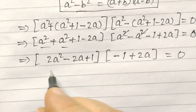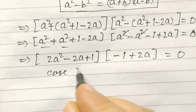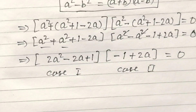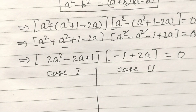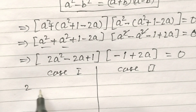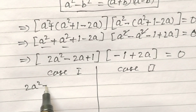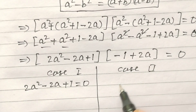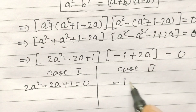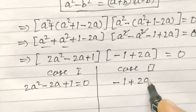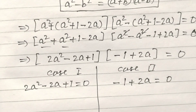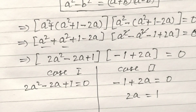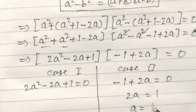We now have two cases. Case 1: minus 1 plus 2A equals 0, so 2A equals 1, giving A equals 1/2. Case 2: 2A² minus 2A plus 1 equals 0, which we solve using the quadratic formula.